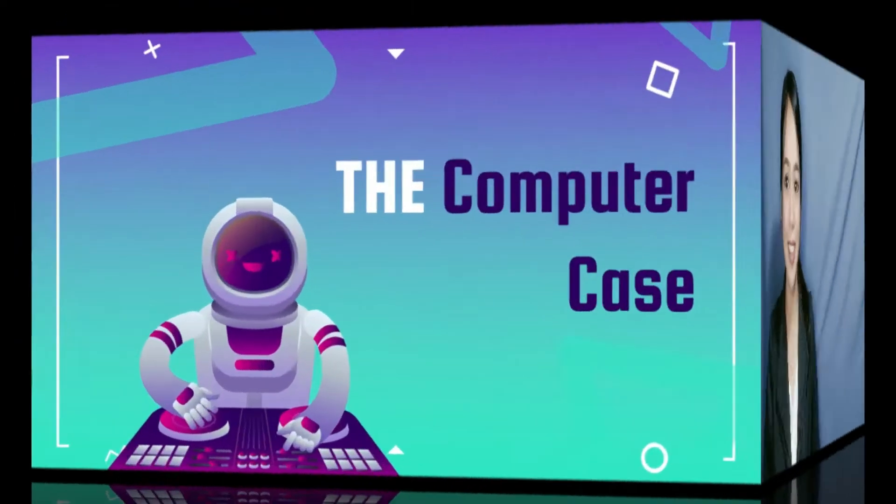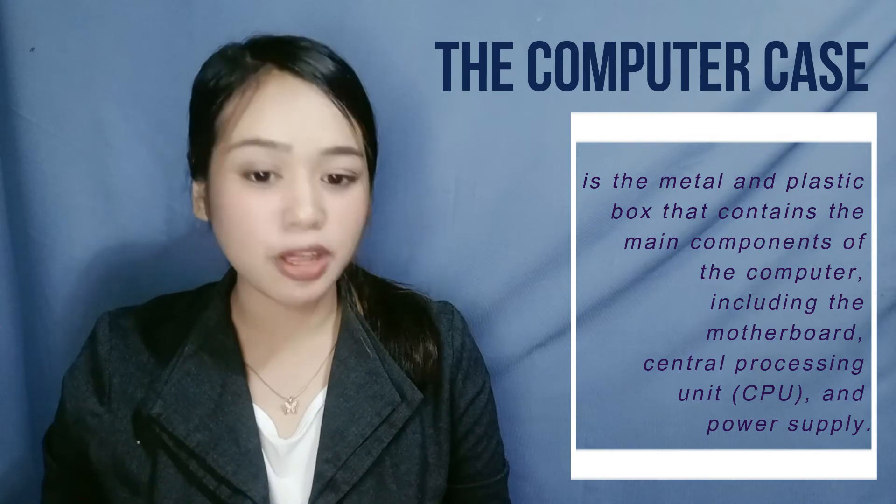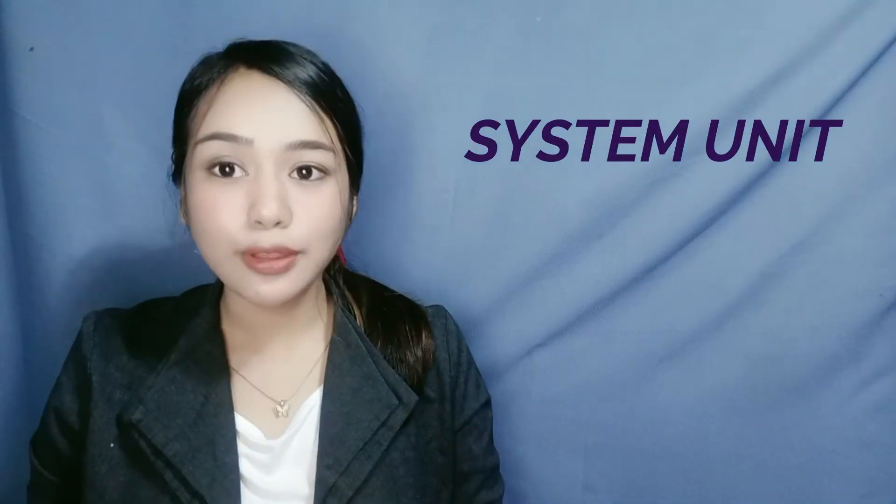Let us start with number one, the computer case. The computer case is the metal and plastic box that contains the main components of the computer, namely the motherboard, the central processing unit or the CPU, and the power supply. The front of the case usually has an on and off button and one or more optical drives. This is how a computer case looks like. Have you heard of the term system unit? The computer case and the system unit are basically the same thing.